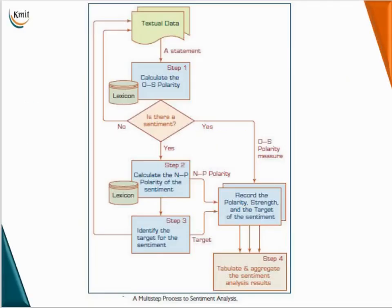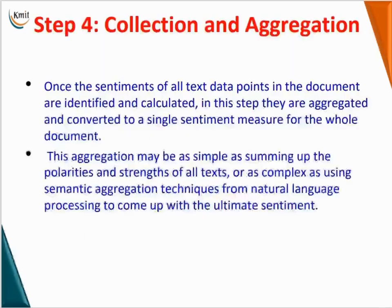This is the multi-step process for sentiment analysis. Step 1 is to calculate the objectivity-subjectivity polarity. Step 2 is calculating the negative-positive polarity of the sentiment. Step 3 is identifying the target for the sentiment, and step 4 is to tabulate and aggregate the sentiment analysis results.